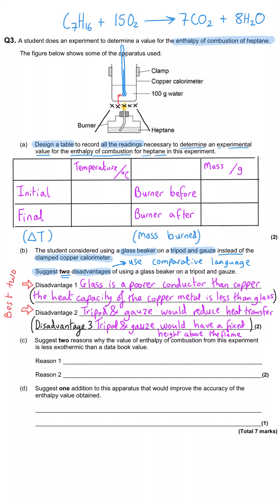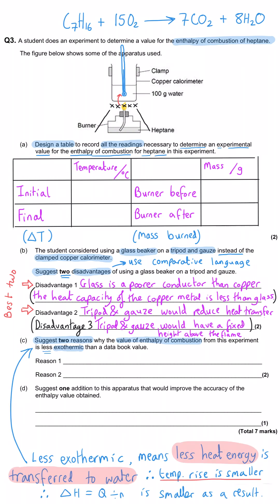In C we're asked to suggest two reasons why the value of enthalpy of combustion from this experiment is less exothermic than a data book value. First of all this is a really common question and you need to memorize a couple of these options.